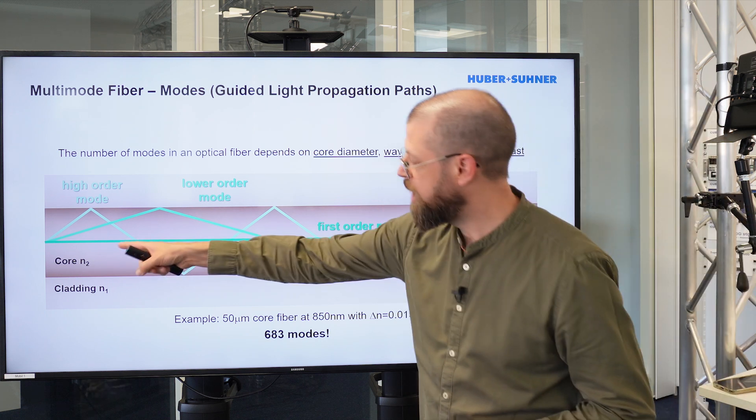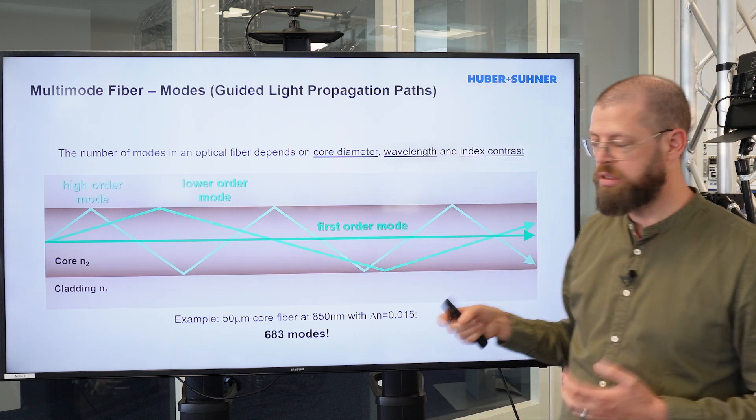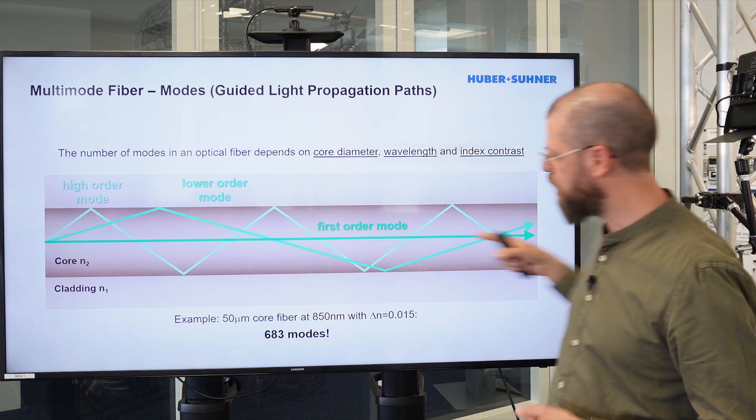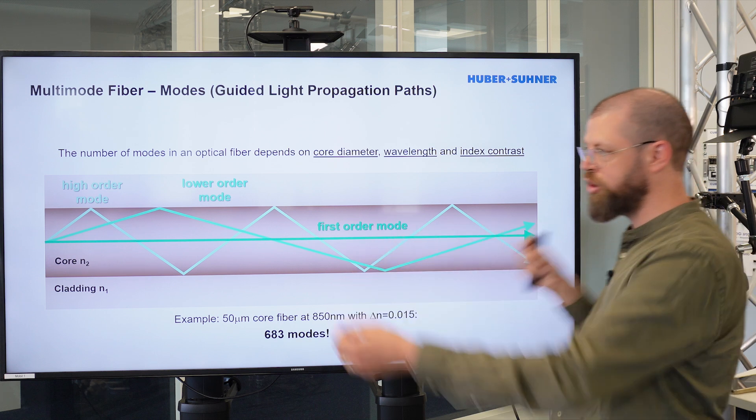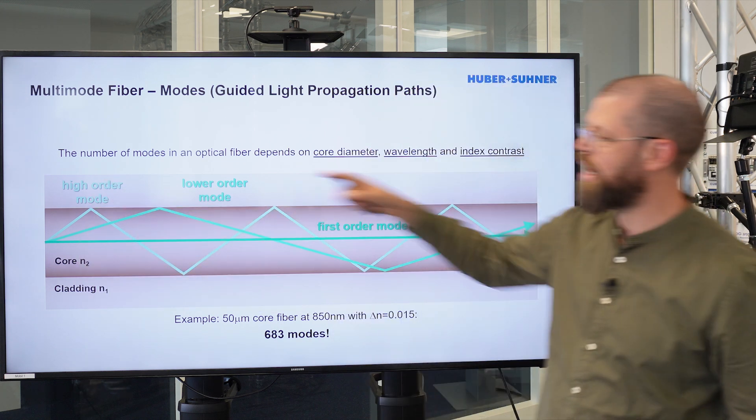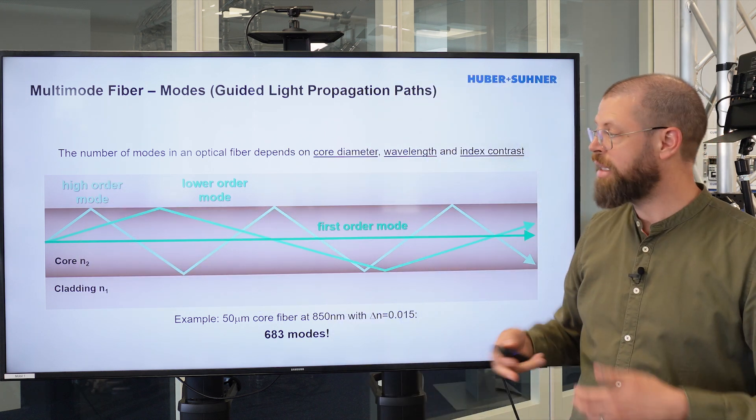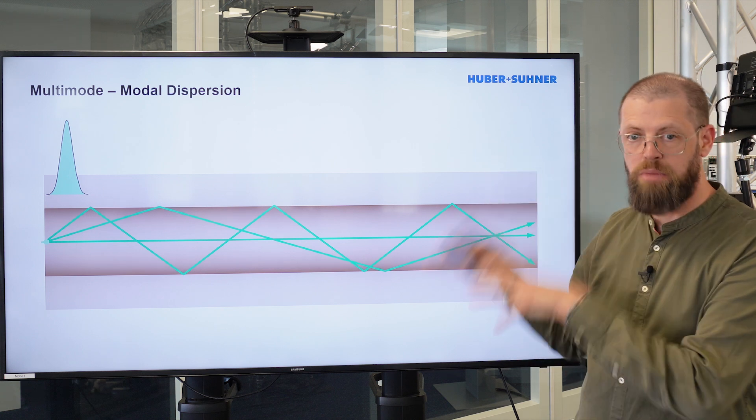The point is that depending on the mode, the path that the light signal takes, it has to cover different distances, because the first-order mode is much shorter than, for example, these higher-order modes. And that results in the modal dispersion.